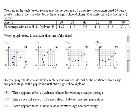Alright, for this last problem in this section, it says the data in the table below represents the percentage of a country's population aged 20 years or older who do not have a high school diploma. Complete parts A through C below.